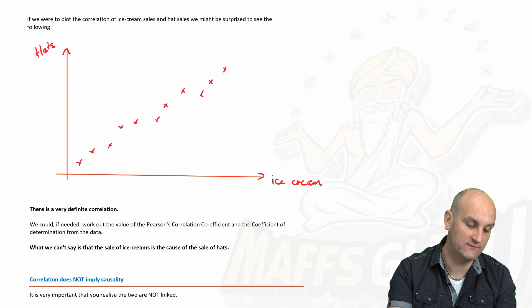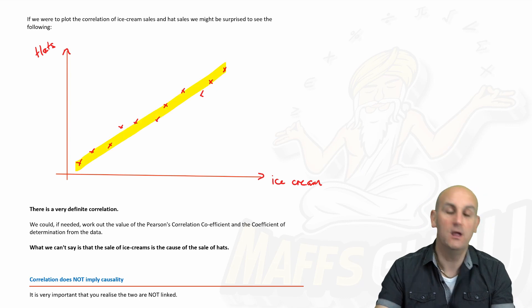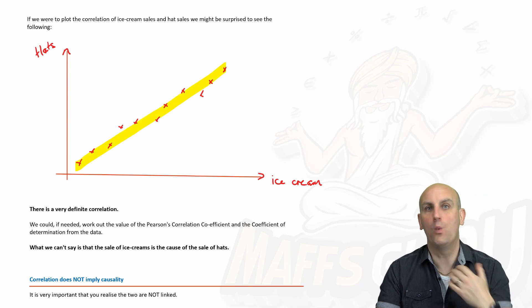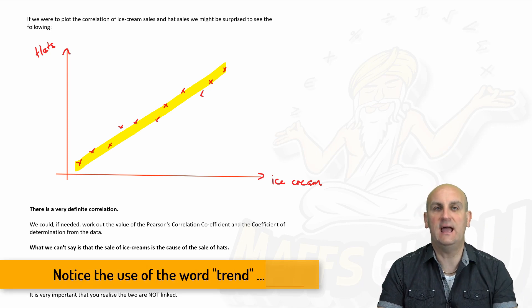What we would notice is that there is a very definite upward trend in our data. Why? How can ice cream sales and hats have this level of correlation?